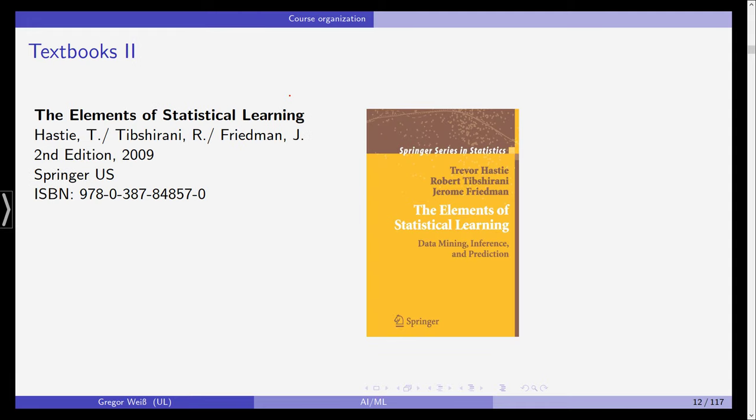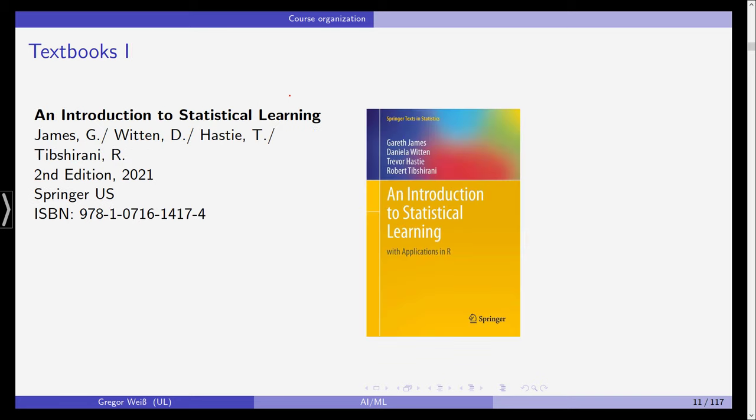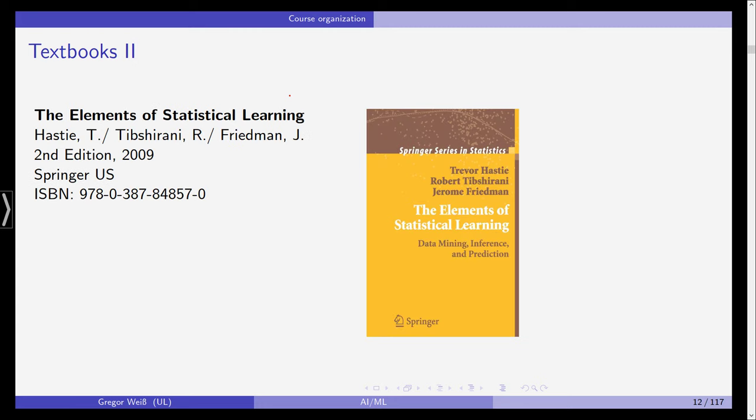The second one, also not surprisingly by Hasty Tip Shirani and this time Friedman, it's a little bit older, elements of statistical learning, has a stronger focus on data mining, doesn't include that much R programming code. So this first one is maybe a little bit more applied. The second one is a little bit more theoretical. Hasty and Tip Shirani are famous authors from the statistical learning literature. So these two textbooks are actually very, very good.